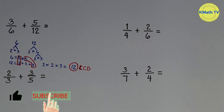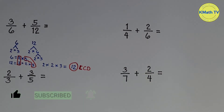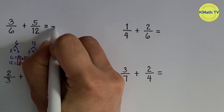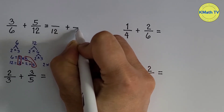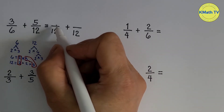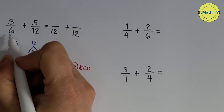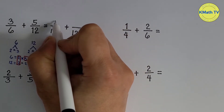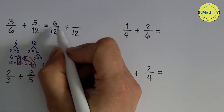Now let's proceed to the second step. We will use this LCD to get the equivalent fractions, changing the fractions to similar fractions. Let's write the LCD: 12 for both denominators. Now let's find the numerator of each fraction. 12 divided by 6 equals 2; 2 times 3 equals 6. So the numerator of the first fraction is 6 — the equivalent fraction of 3 sixths is 6 twelfths.